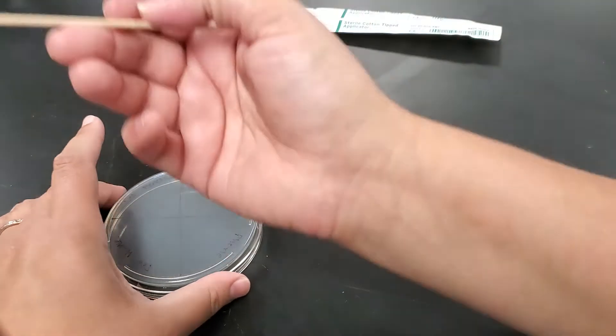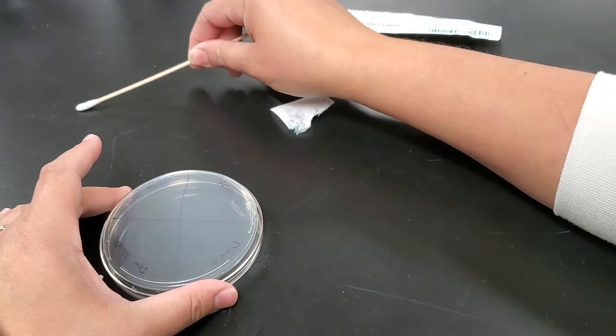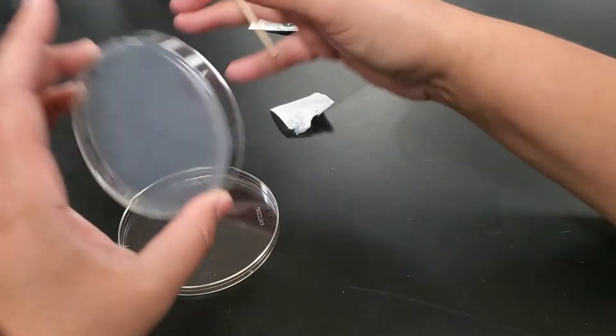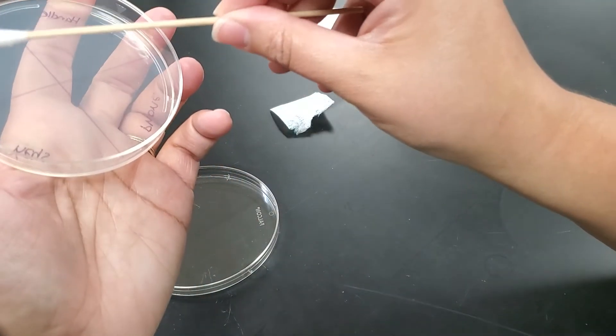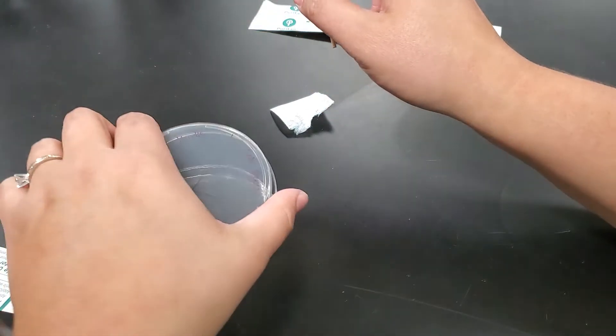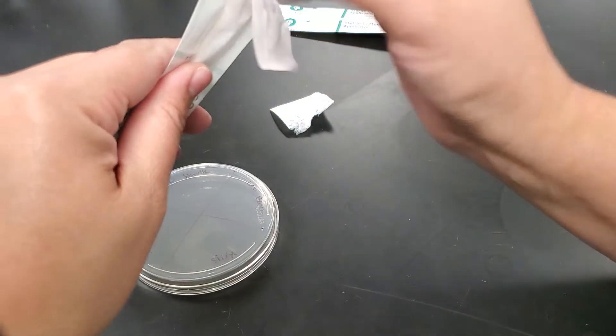For each different thing we're going to use a different cotton swab. So I'm just going to go ahead and swab that bench and then I'm going to swab the agar plate in the appropriate area. Once I'm done with that I'm going to put that aside.